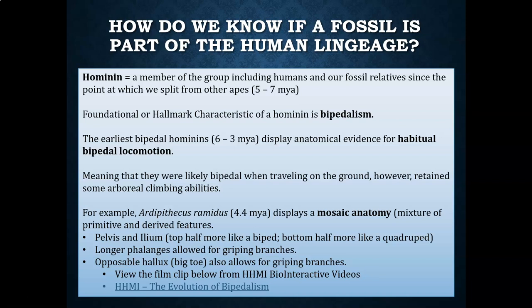Additionally, the phalanges — the finger bones and toe bones — are longer and slightly curved, which would have allowed for more effective gripping of branches. The hallux, or big toe, is also opposable, allowing for gripping of branches.